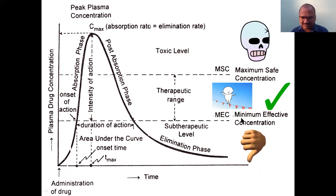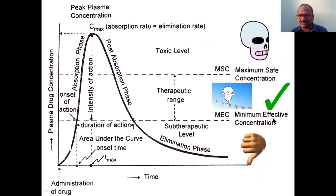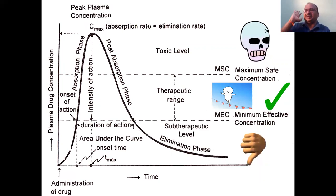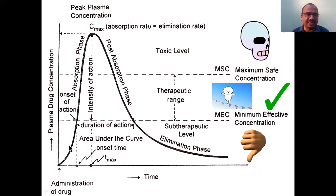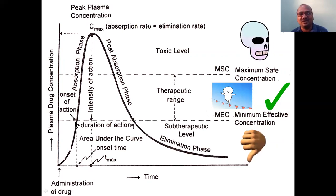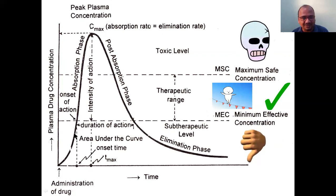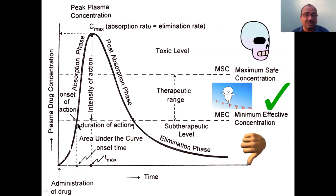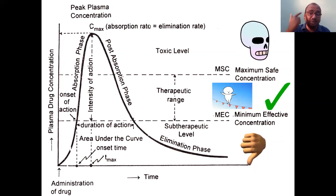This lower line is called the Minimum Effective Concentration (MEC). The name itself indicates that the drug concentration must cross this line to produce an effect. When the increasing drug concentration crosses the MEC, that is the onset of action — the patient starts getting a cure at this time. This is onset of action, and the time at which it crosses MEC is called onset time.